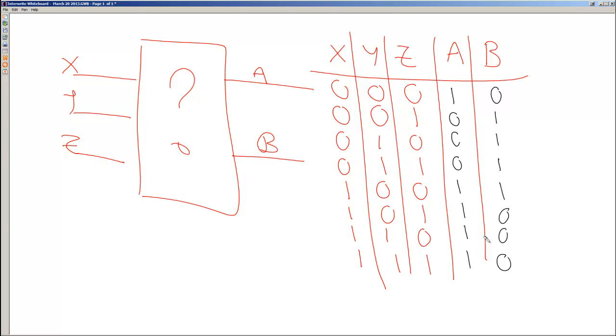Now there's one other thing when we're dealing with truth tables that we sometimes run across with circuit design. We may have again, let's say we have three inputs, and we need to design a circuit for those three inputs. And let's just say we have one output A in this case. And we again build our truth table.